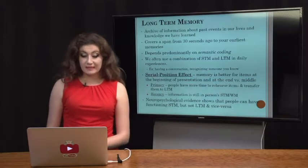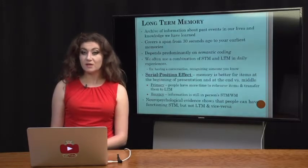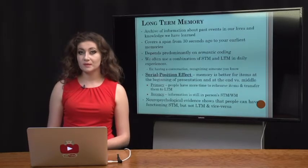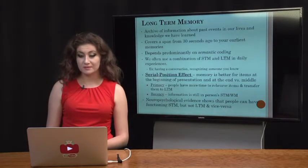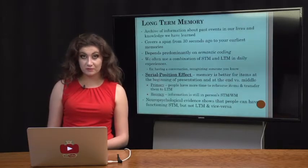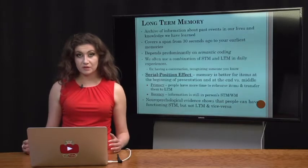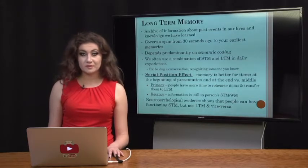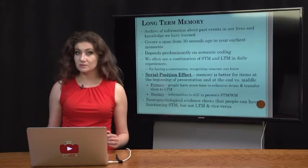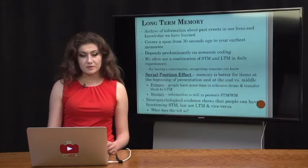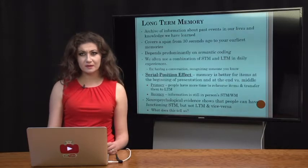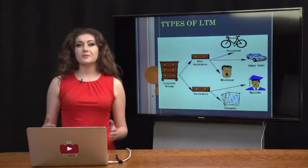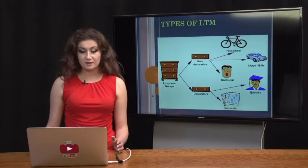Neuropsychological evidence shows that people can have functioning short-term memory but not long-term memory, and vice versa. In one sense, you can have long-term memories but not be able to make new ones — your short-term memory is affected. On the other hand, people can live within only 15 to 30 seconds, as we've seen with the case of Clive Wearing, where the transfer from short-term to long-term memory is damaged. This tells us that different parts of the brain regulate these two different types of memory.